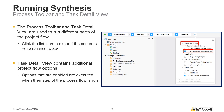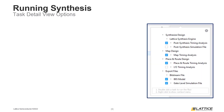One important thing to remember is that the selections made for different steps in task detail view also apply to their corresponding steps in the process toolbar. There are three kinds of options that can be enabled in Radiant's task detail view.